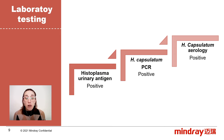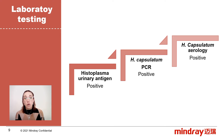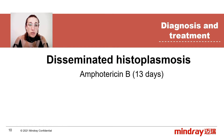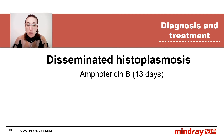Instead, laboratory tests such as urinary antigen, PCR, and serology for Histoplasma capsulatum were done, all of them giving a positive result. With these results, the patient was diagnosed with disseminated histoplasmosis and started treatment with amphotericin B for 13 days.